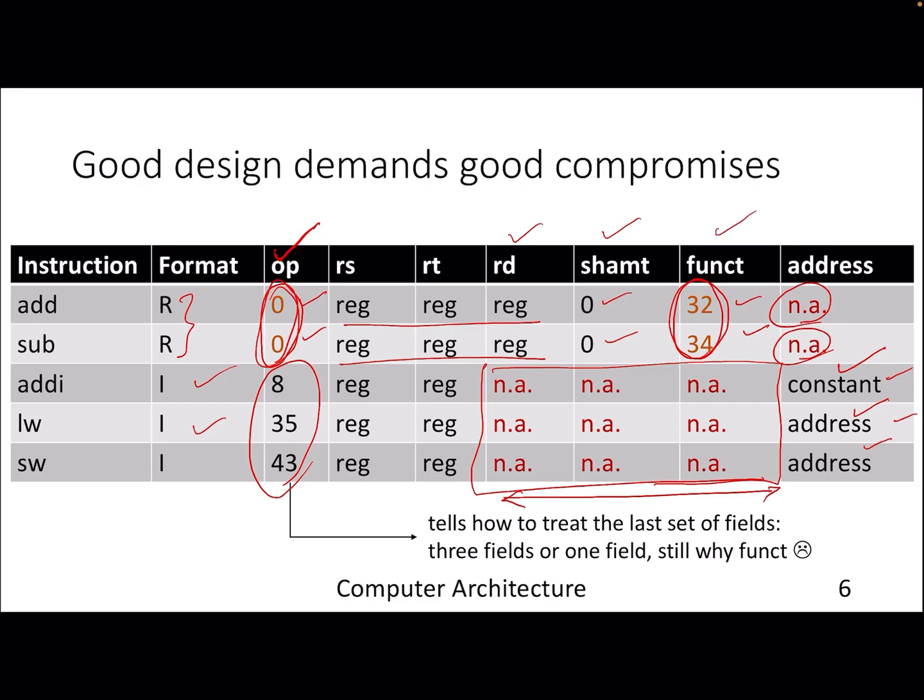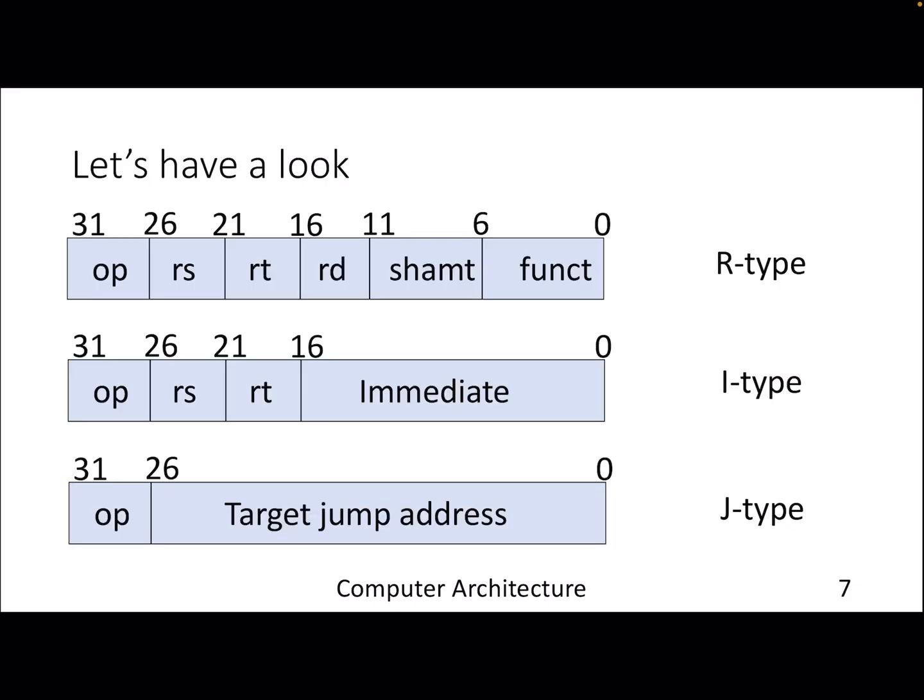But still we didn't answer why we are using this functionality field. This is a summary of all kinds of instructions that we will see: some register type, some immediate type that includes loads and stores, and some branch type instructions that include jumps. In all these cases, the upper 6 bits are the same. It denotes the operation. If you look at the R-type and I-type, even the upper 16 bits are the same. I'm not saying the content of those 16 bits are same, I'm saying the formatting is same. The lower 16 bits differ in terms of the fields, whether it's a single field or three fields. That will be determined by the opcode as we discussed in the previous slide.